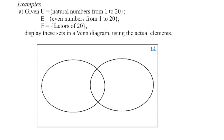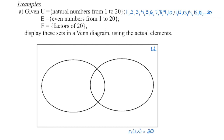The universal set contains all natural numbers from one to 20, giving us 20 elements total. We're then given two subsets: subset E, which we write in one of the ovals, and subset F in the other. E is all even numbers from one to 20, so two, four, six, eight, ten, et cetera. The number of elements in the universal set is 20.